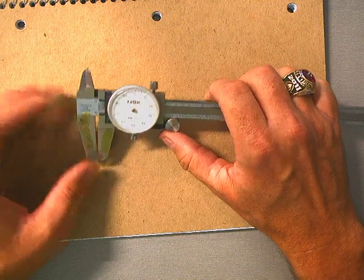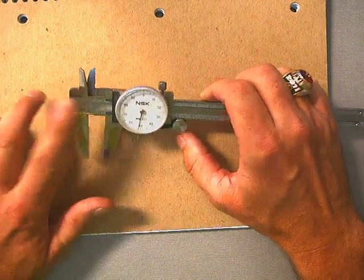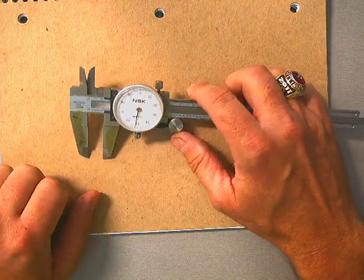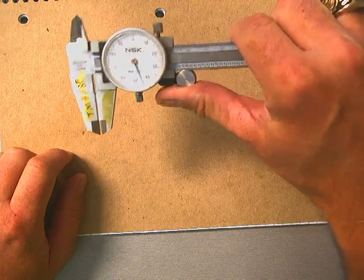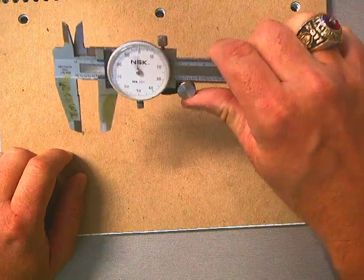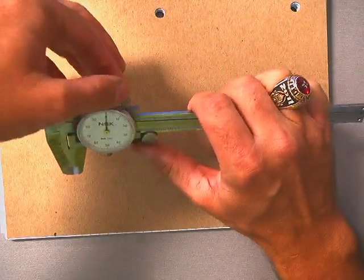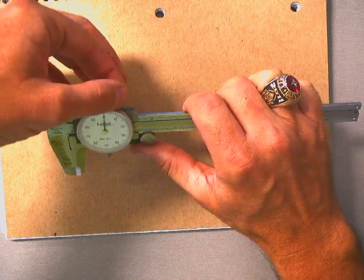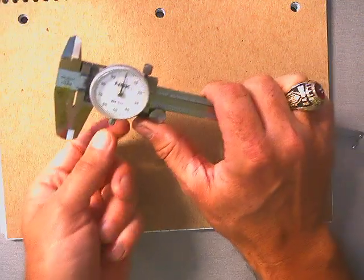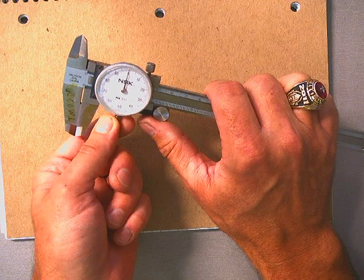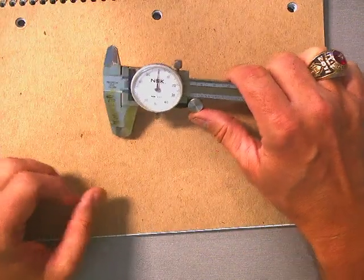Important parts that you need to know about this tool: besides the jaws, we have a solid frame, a movable frame, a thumb screw which we use to move back and forth, a lock so we can lock down our measurement once we measure an item, and the zeroing mechanism for the dial.